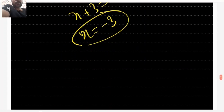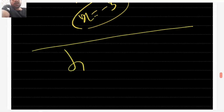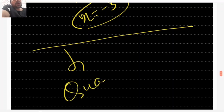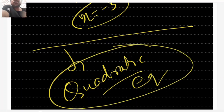For each and every quadratic equation you are going to get two answers. Now you know how to solve a quadratic equation with the help of the factorization method. I suppose this was clear and easy.